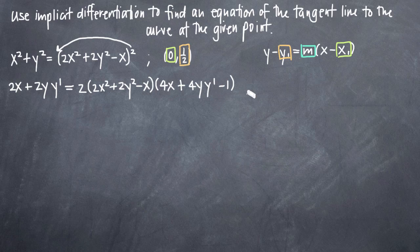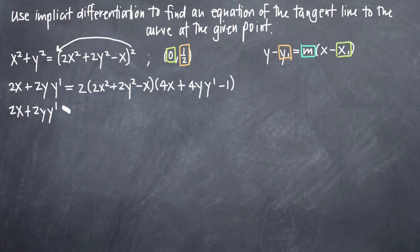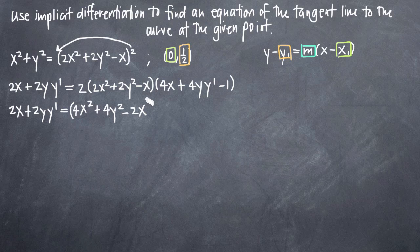That's the derivative of the right-hand side, and now it's just a matter of simplifying. We'll want to solve for y prime, so we need to get all terms involving y prime on the left and everything else on the right. Let's deal with the right-hand side and multiply everything out. We get 2x plus 2y times y prime on the left, and on the right we distribute the 2 to get 4x² plus 4y² minus 2x, multiplied by 4x plus 4y·y prime minus 1.